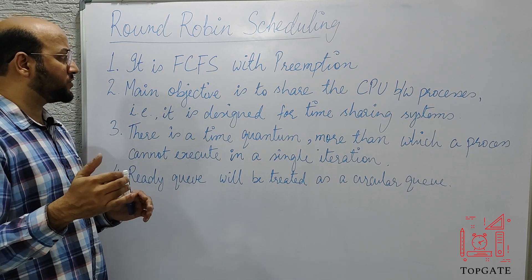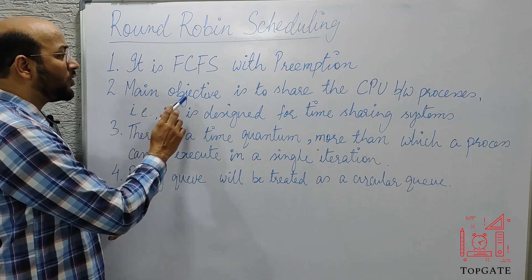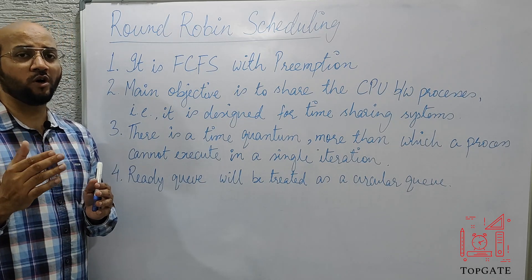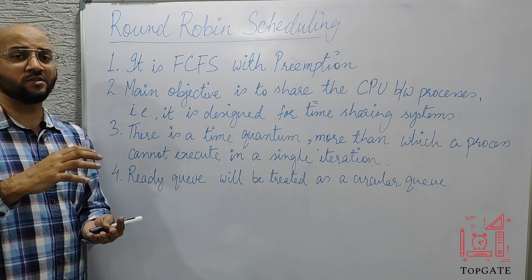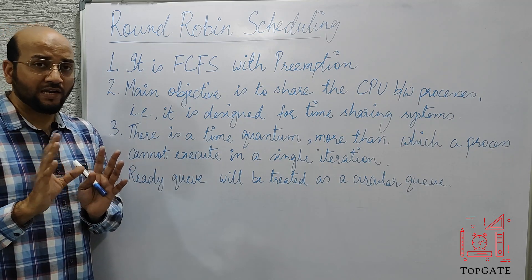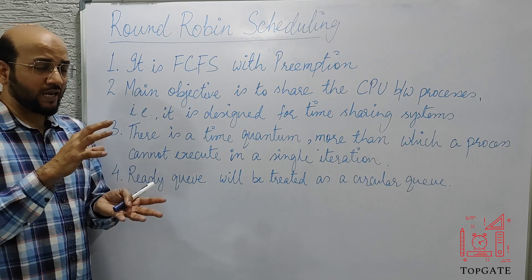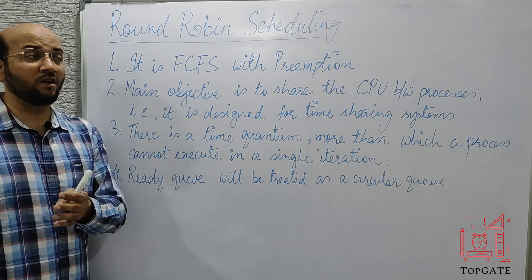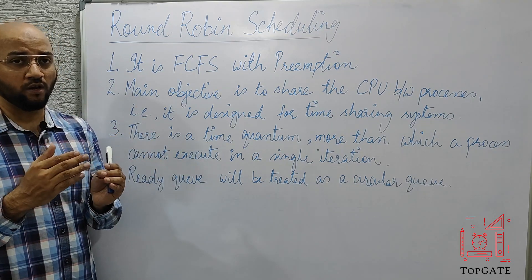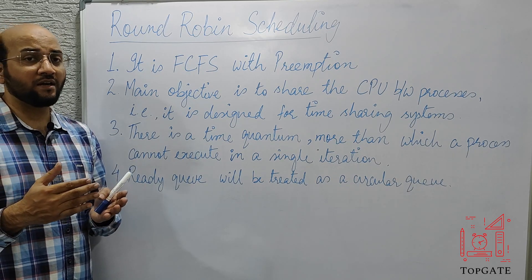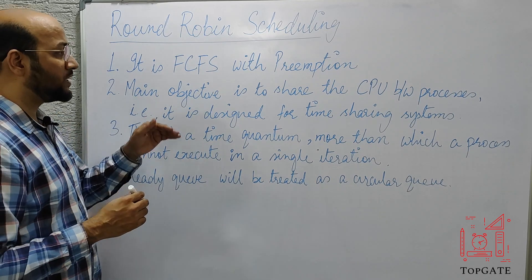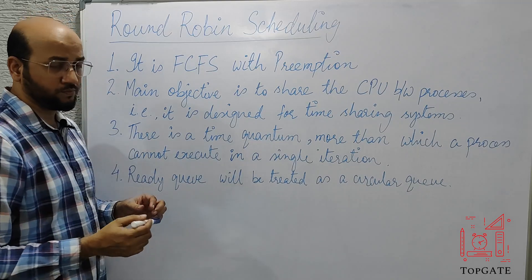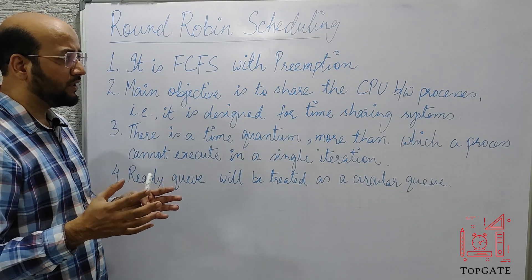The second point: the main objective is to share the CPU between processes. In FCFS, a process with a very high burst time holds the CPU until it completes, making all other processes wait. Round Robin is designed for time-sharing systems where many applications need to execute simultaneously.